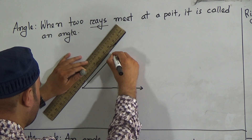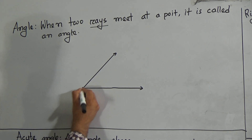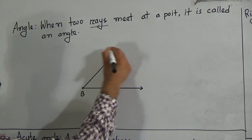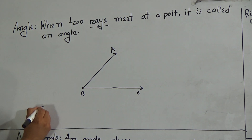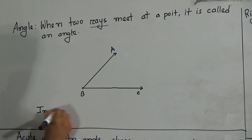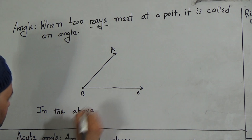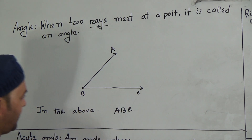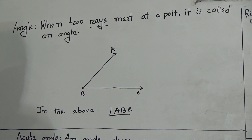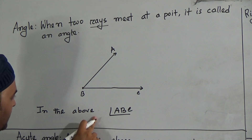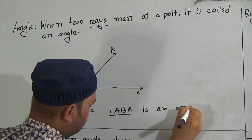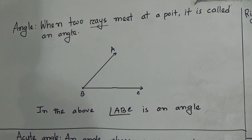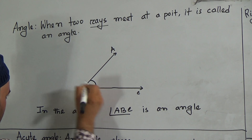Then draw another ray at the same point. Denote this point by B, this point by A, and this point by C. Then we can write in the above figure: angle ABC — and this sign is called the angle sign — so angle ABC is an angle.